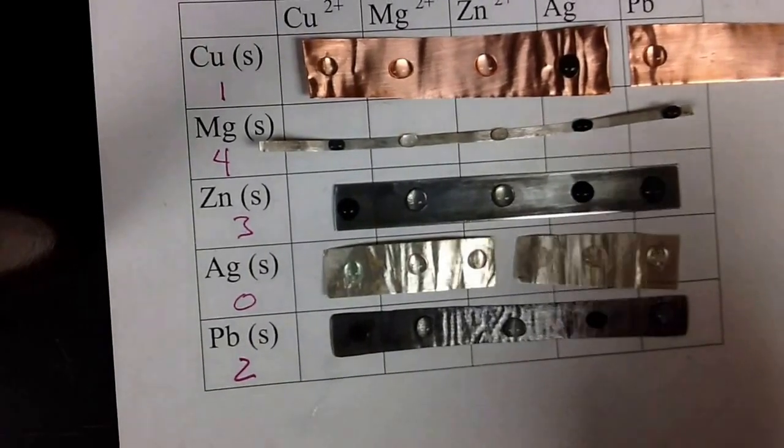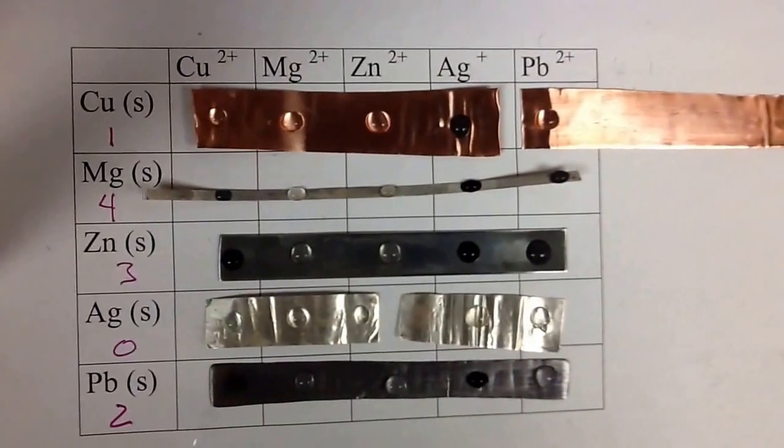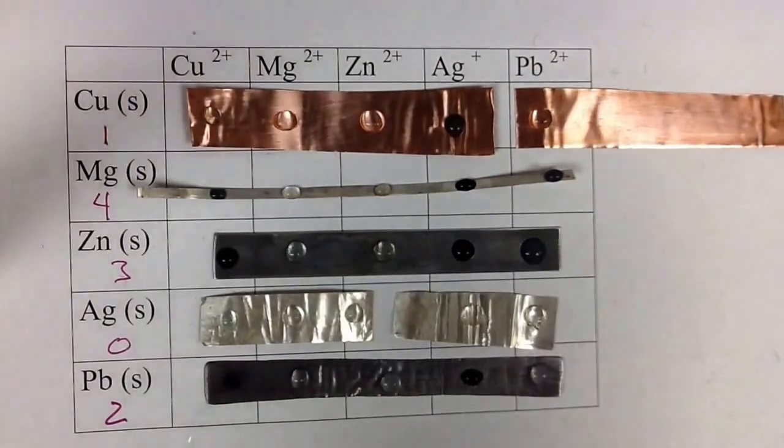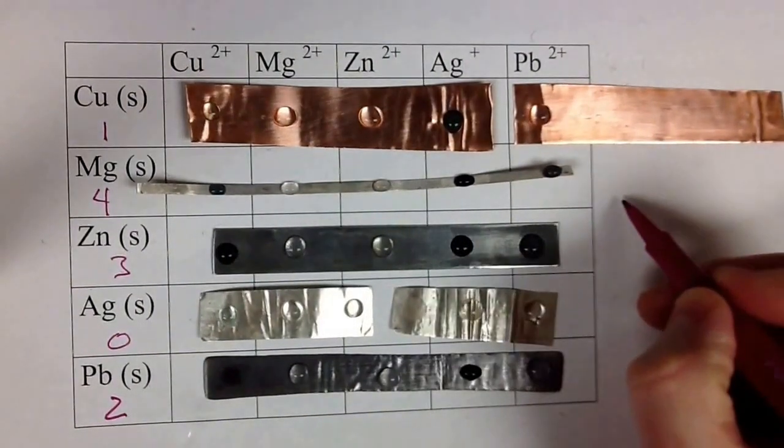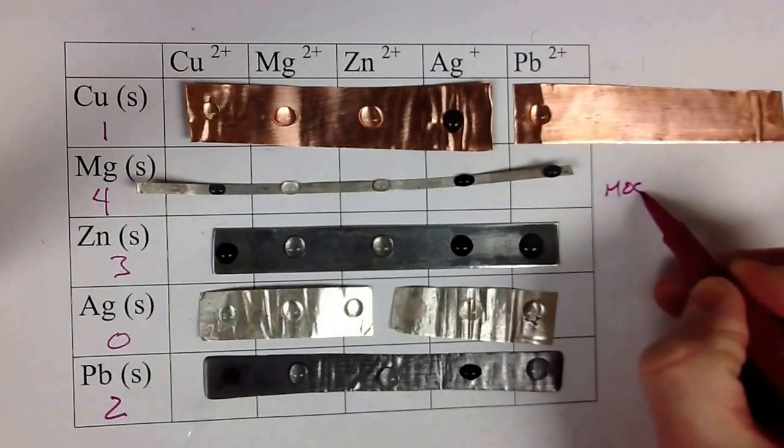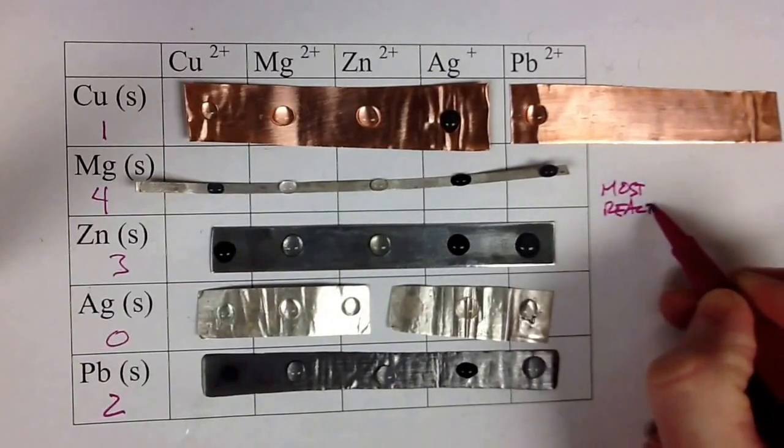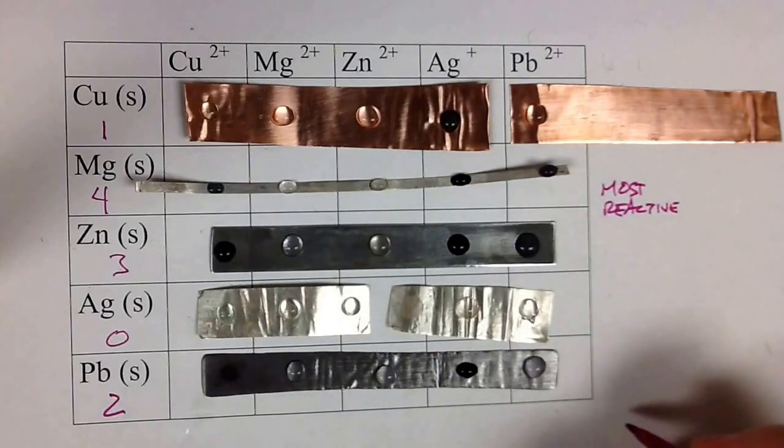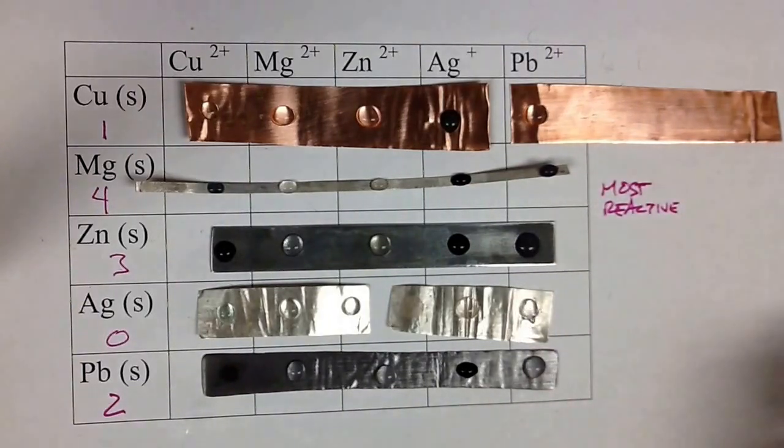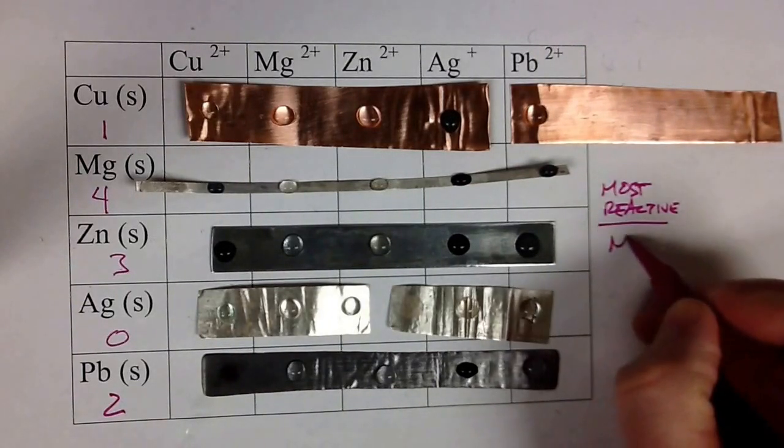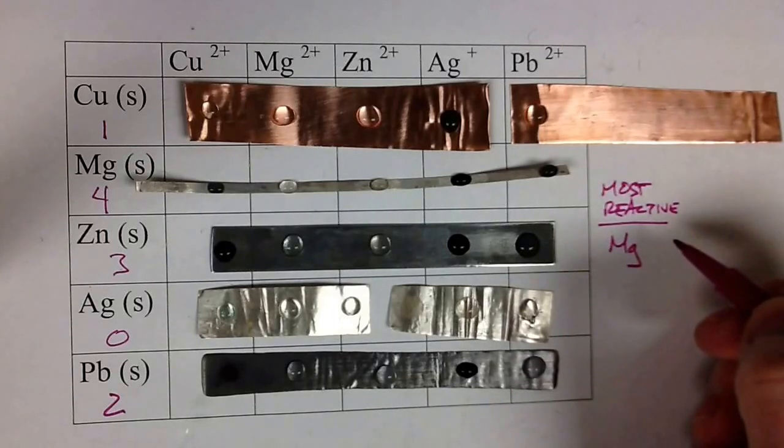So from this, what we can create is called a metal activity series. So from this, from the most reactive down to the least reactive. So our most reactive metal is magnesium because it had the most reactions. It had four.